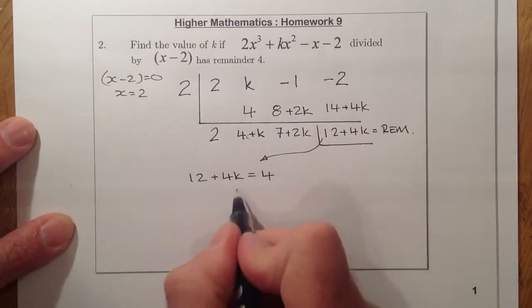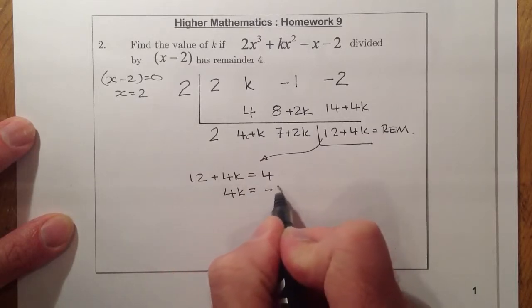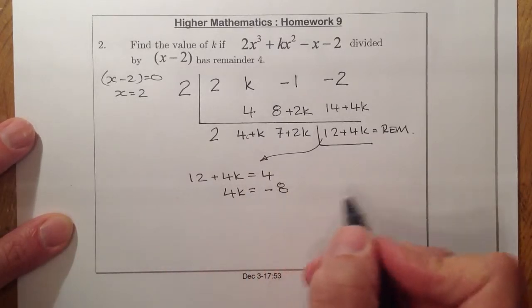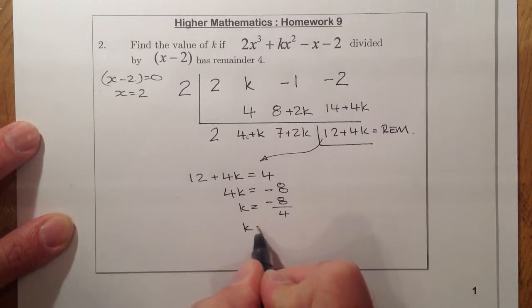I'll then take the 12 over to the other side, which will give me four k is equal to negative eight. So k is just going to be minus eight divided by four. K will give me a value of minus two.